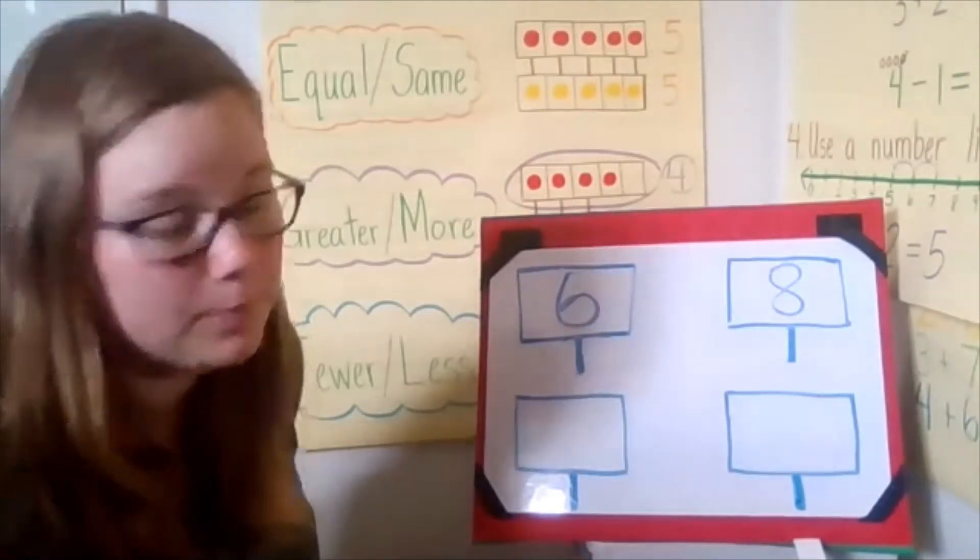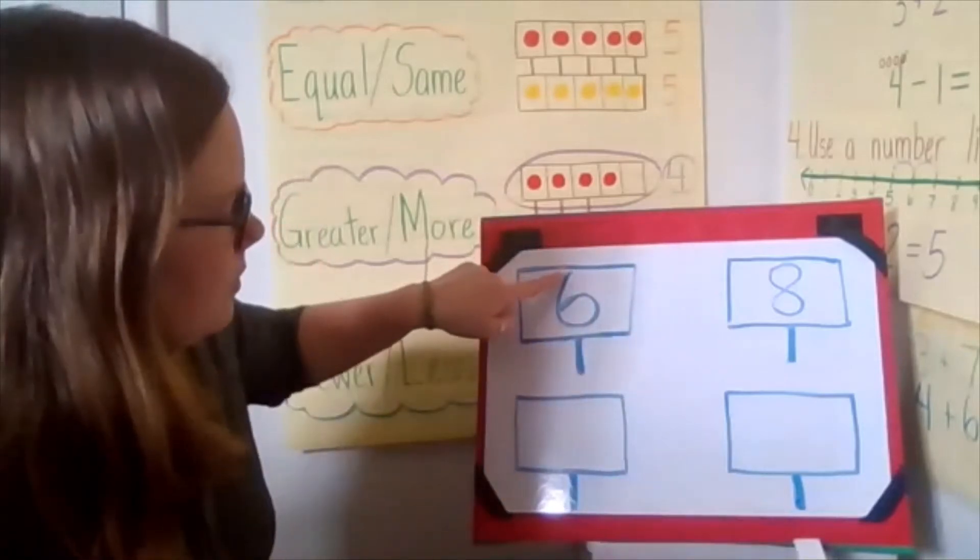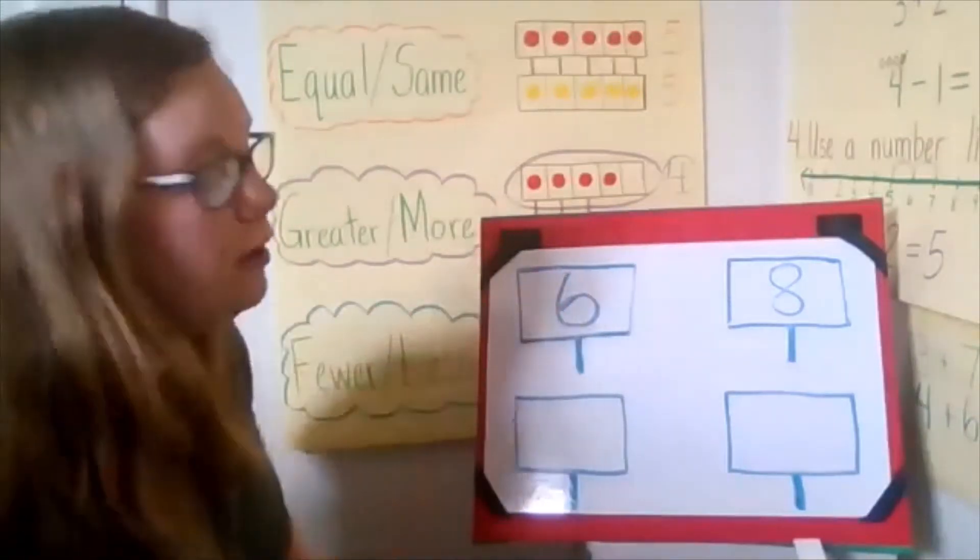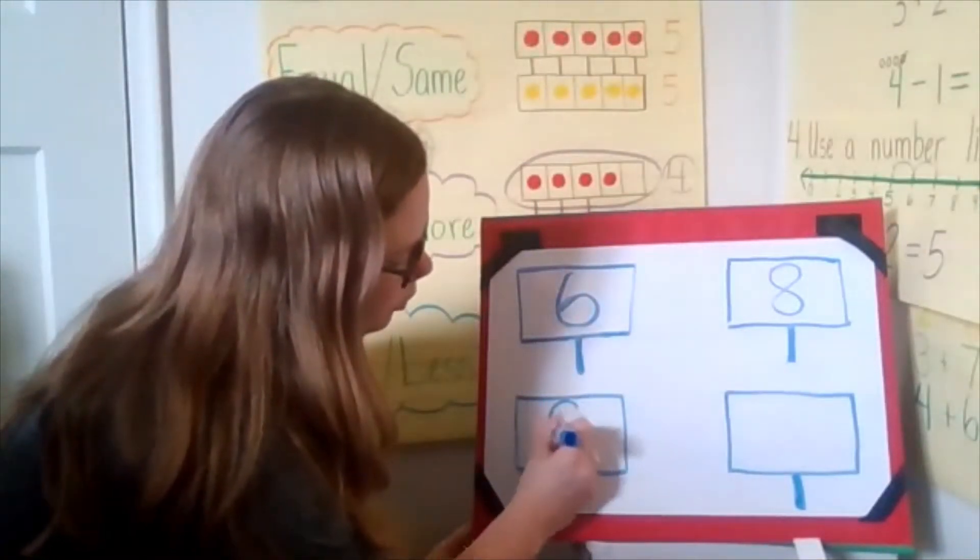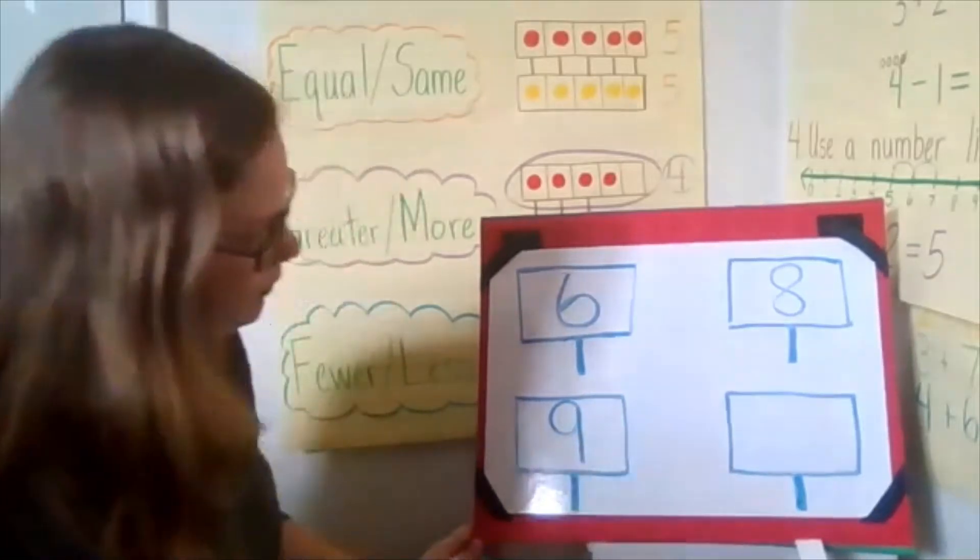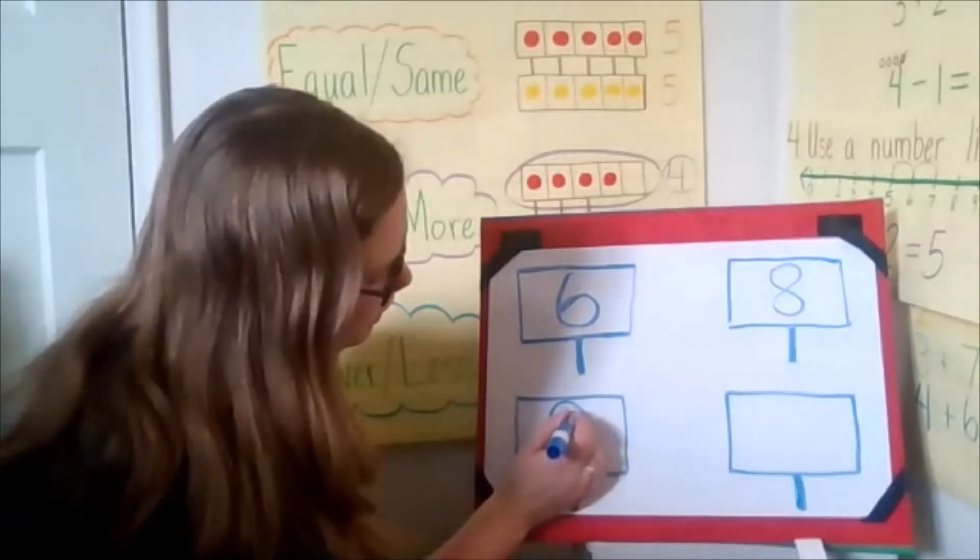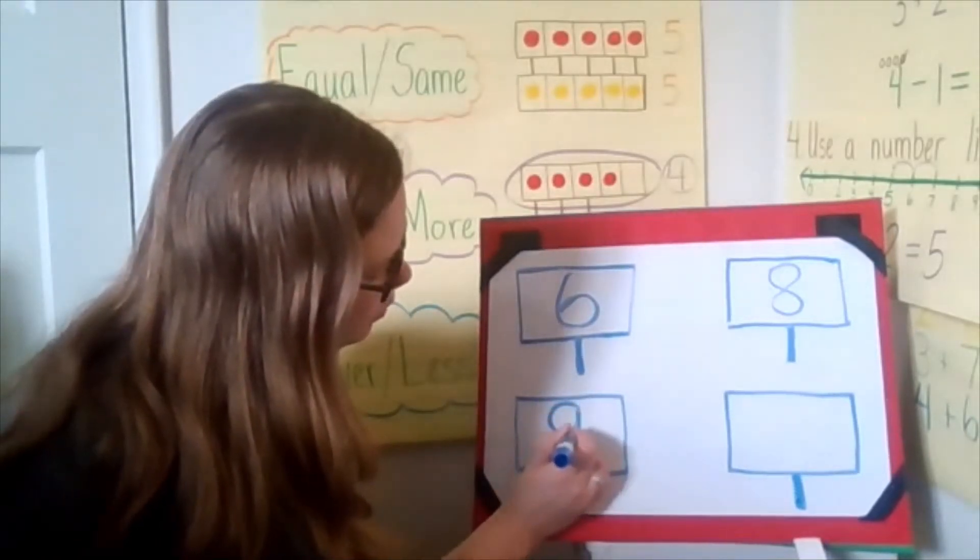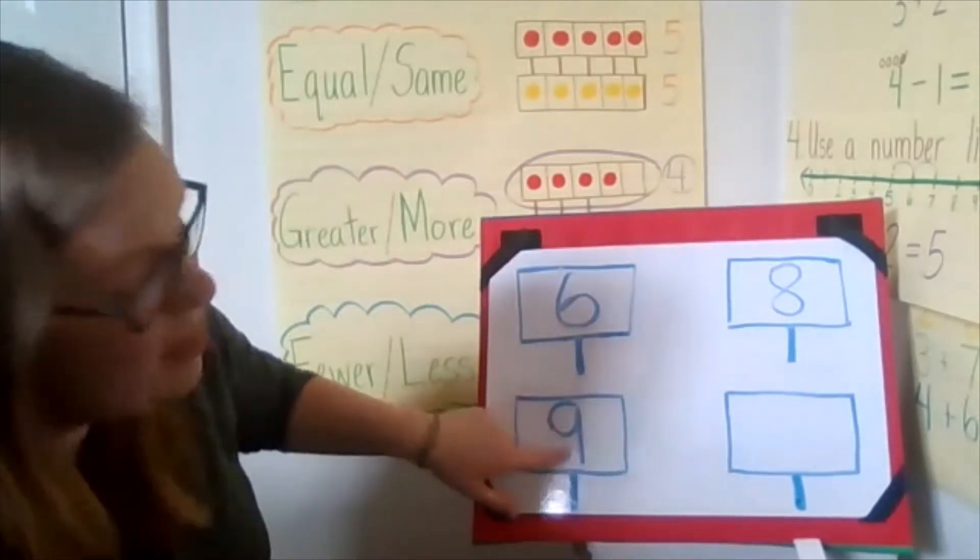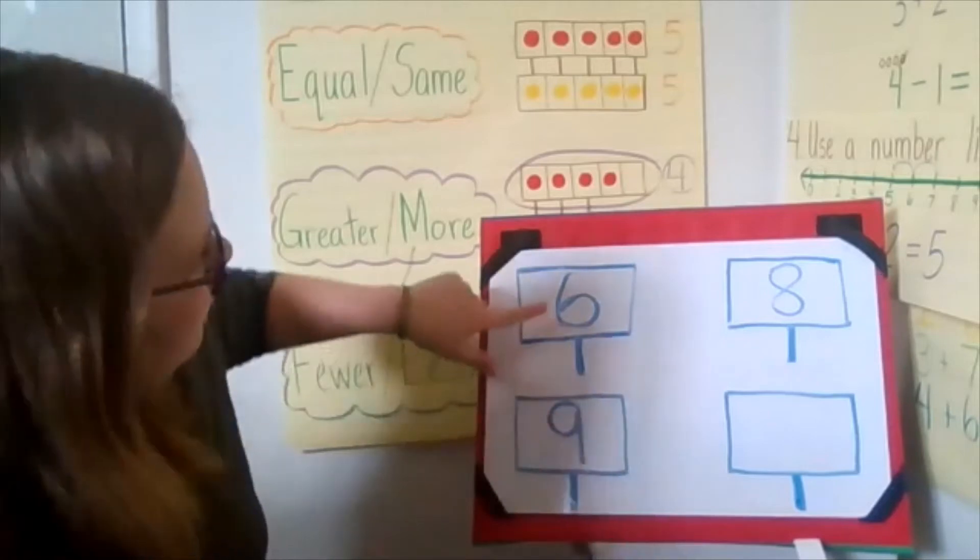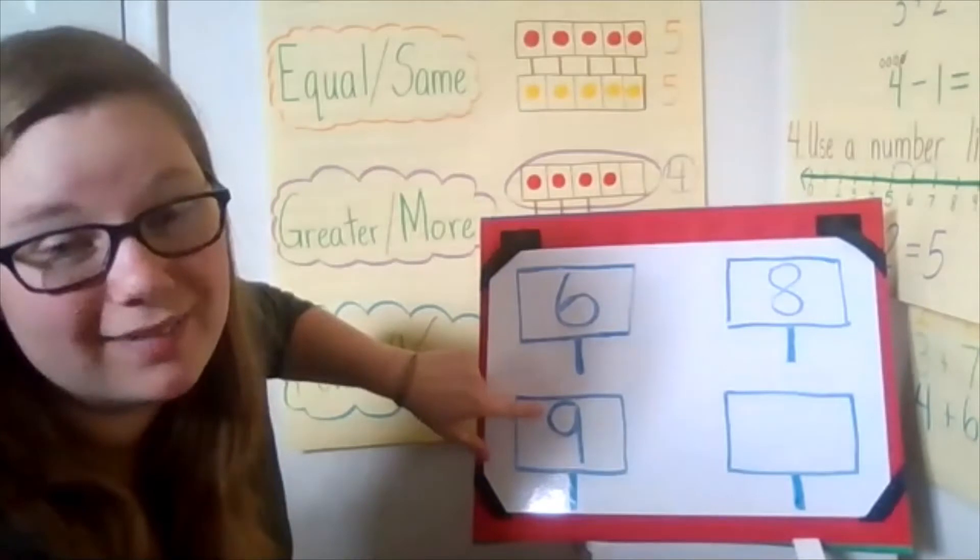The next number is a nine. I want you to think, remember, our six starts with the line, then a loop, but our nine goes a loop, then a line. And do you see how my loop goes this way? Make sure that when you make your loop, you're going the right way. So, a loop, and then a line. That's the way you make a nine. So, we start with the line on the six, but we start with the loop on the nine.